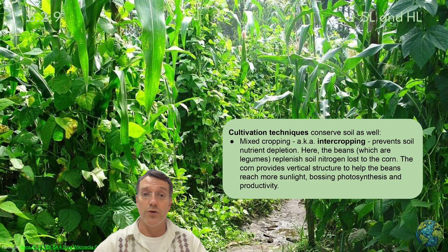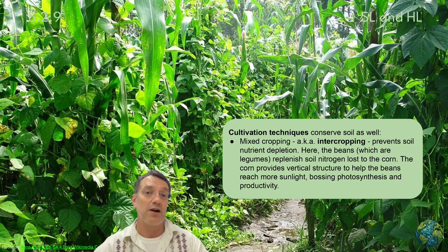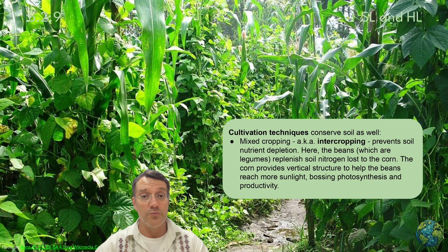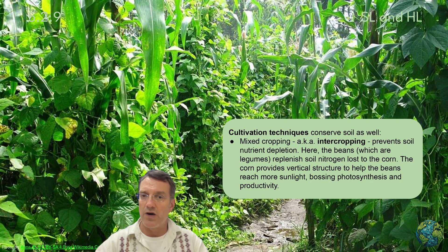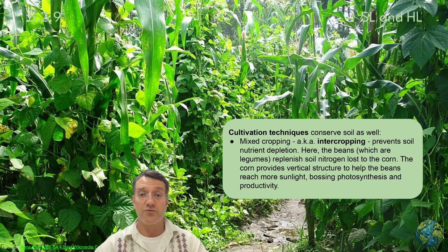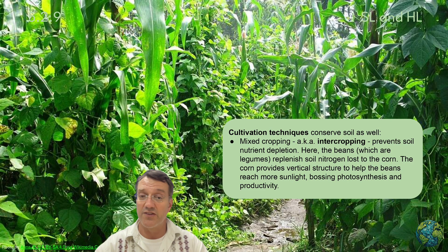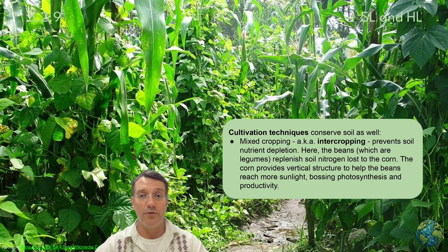This lush growth shows intercropping — beans growing among corn plants. The beans, being legumes, replenish the soil nitrogen that the corn uses. Meanwhile, the corn provides vertical structure to help the beans grow upwards and reach more sunlight, which boosts both photosynthesis and productivity. This kind of partnership benefits both crops while maintaining soil health.